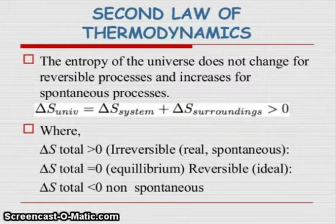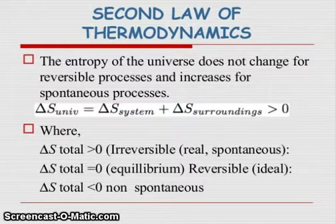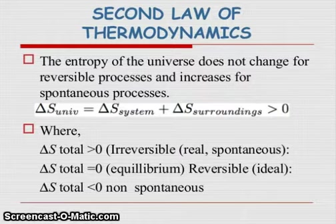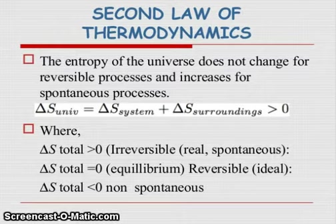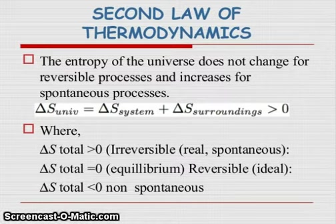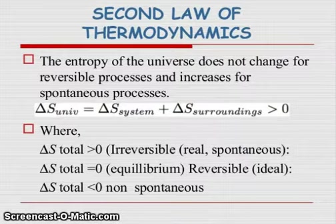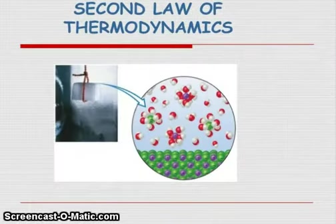Second law of thermodynamics: the entropy of the universe does not change for reversible processes and increases for spontaneous processes. ΔS universe equals ΔS system plus ΔS surrounding greater than zero. Where ΔS total greater than zero means irreversible or spontaneous and real. If ΔS total equals zero, it's equilibrium, reversible, and ideal. And if ΔS total less than zero, it's non-spontaneous.